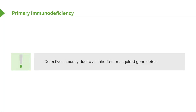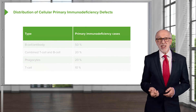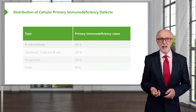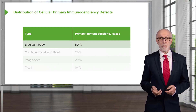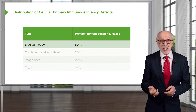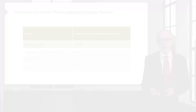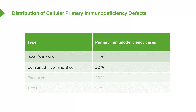Now we're going to discuss primary immunodeficiency. Primary immunodeficiency is defective immunity that is due to either an inherited or an acquired gene defect. Around about half of primary immunodeficiency defects are caused by defects in B cells and therefore in antibody production. Around about 20% are combined T and B cell defects, approximately 20% affect the phagocytic cells, and around about 10% affect just the T cells without affecting other parts of the immune response.